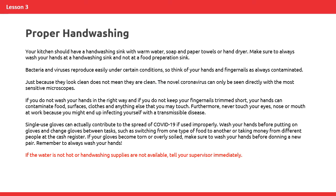Proper hand washing. Your kitchen should have a hand washing sink with warm water, soap, and paper towels or a hand dryer. Make sure to always wash your hands at a hand washing sink and not at a food preparation sink. Bacteria and viruses reproduce easily under certain conditions, so think of your hands and fingernails as always contaminated. Just because they look clean does not mean that they are clean. The novel coronavirus can only be seen directly with the most sensitive microscopes. If you do not wash your hands in the right way, and if you do not keep your fingernails trimmed short, your hands can contaminate food, surfaces, clothes, and anything else that you may touch. Furthermore, never touch your eyes, nose, or mouth at work because you might end up infecting yourself with a transmissible disease.